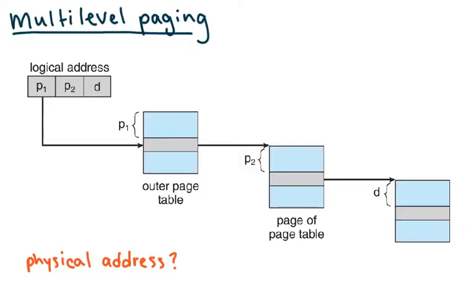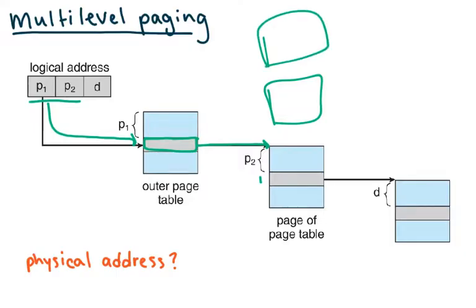Here we have a two-level page table with two different page numbers, p1 and p2. We address into our first page table, which tells us which second-level page table to go to, since there are multiple page tables at that level. Then p2 tells us where to go within that inner page table. The physical address becomes a combination of all the page number pieces and the offset.